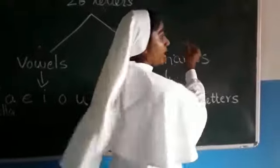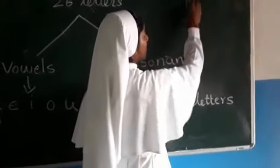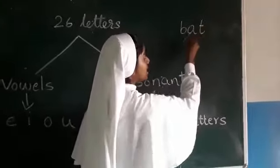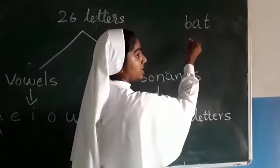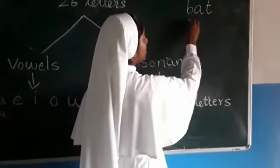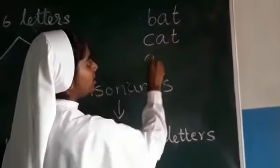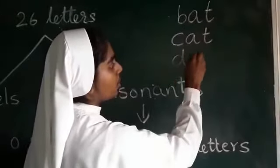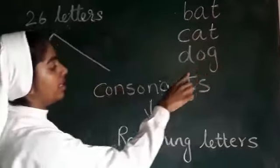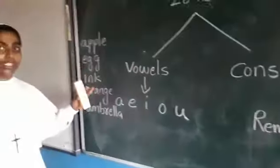A — vowel. B — consonant. C — consonant. C for cat. D for dog. These all will be consonants. And these are vowels.